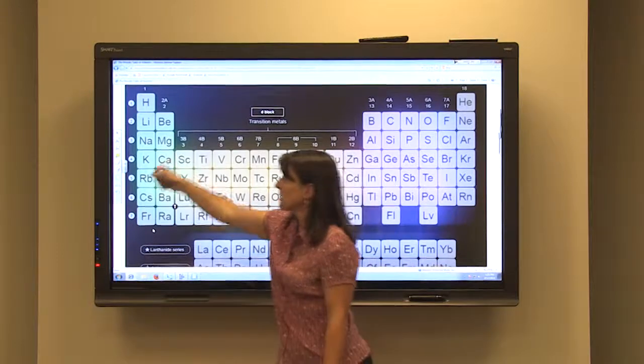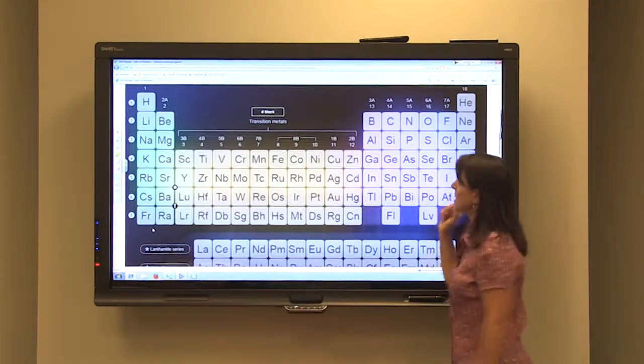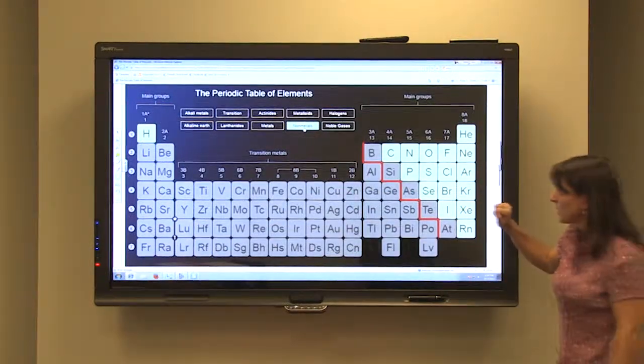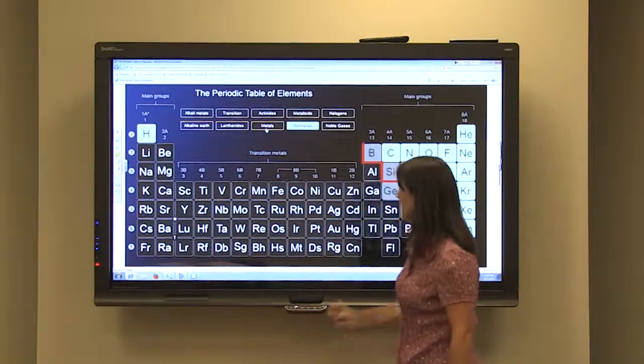In terms of metallic character, it's going to decrease as we go across the periodic table. As you recall, non-metals are on the right side of the periodic table. Your metals are on the left side of the periodic table.